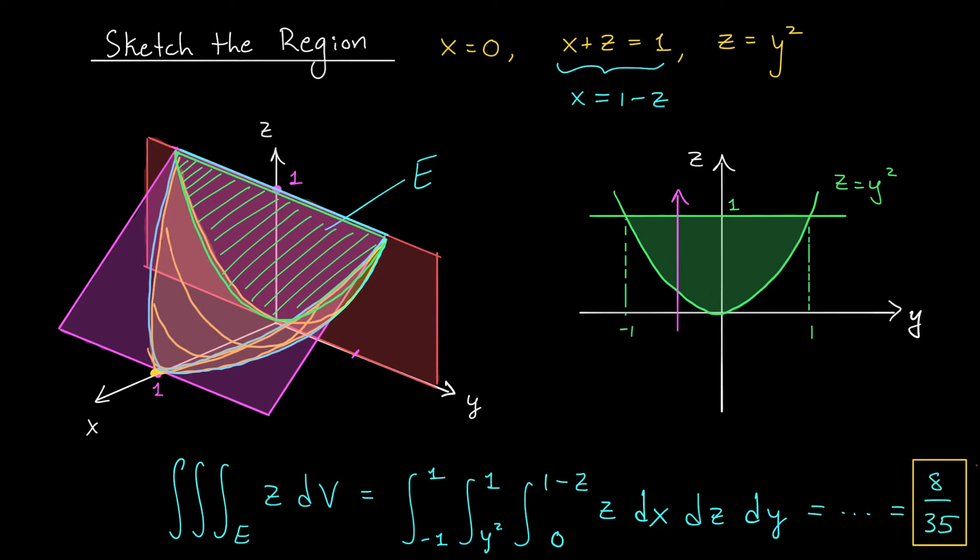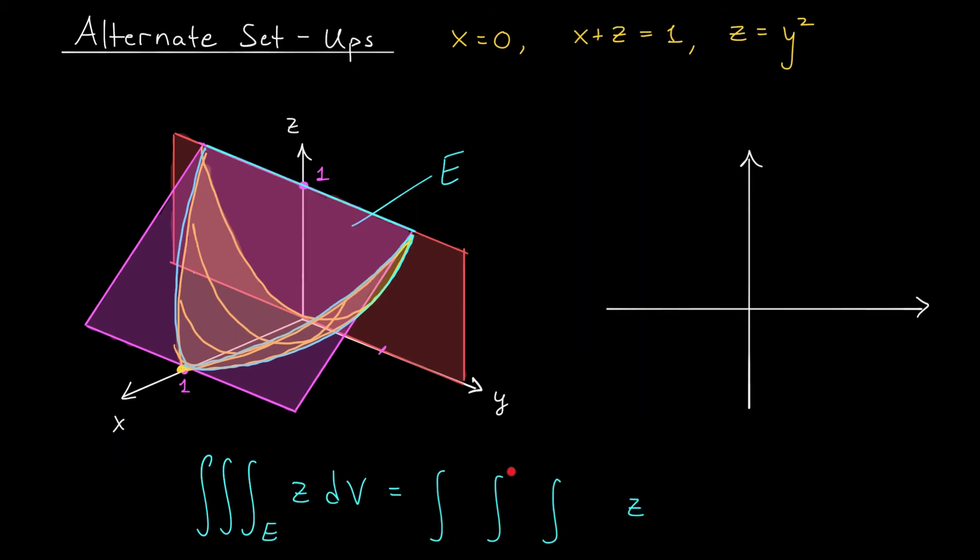To wrap up this video, let's check out a couple other ways that we could have set up this triple integral. Maybe you wanted to set up this triple integral a little differently. If you don't want to integrate first with respect to x, you can choose a different variable, say z. To figure out the bounds on a z integral, we have to draw an arrow through our region moving from bottom to top. It enters our region through the parabolic cylinder, z equals y squared, so that will be our lower bound, and it will exit the region through the pink plane, which we could write as z equals 1 minus x. 1 minus x is the upper bound.